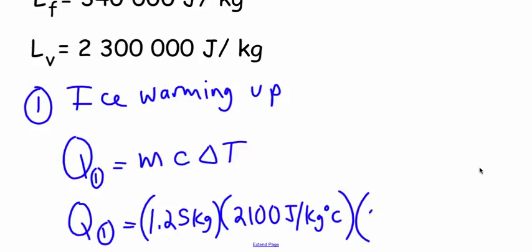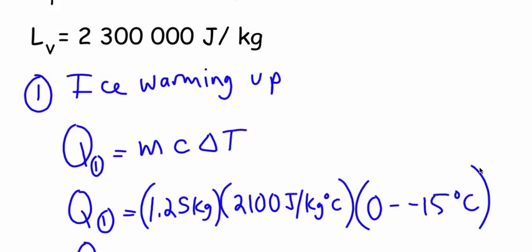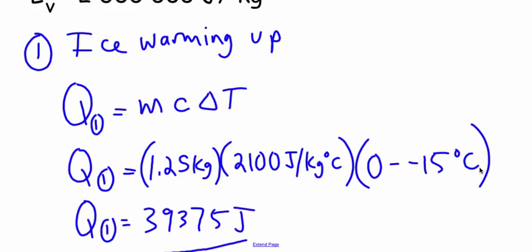And our original temperature was minus 15. So it's going to be zero minus minus 15. 39,375 joules. That's the amount of energy required to warm up the ice. Now we look at the next step.